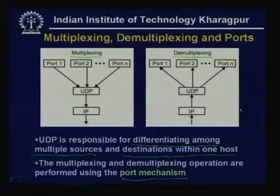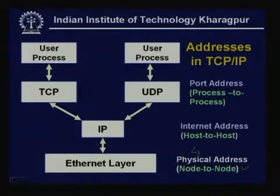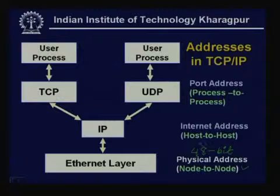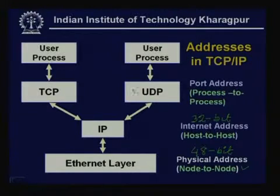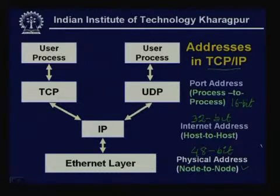A port number is another type of address. There are three types of addresses in TCP/IP: the physical address used by the data-link layer (48-bit in Ethernet), the internet address or IP address used from host to host (32-bit), and the port address used for process-to-process communication (16-bit). These three address types together support TCP/IP communication.